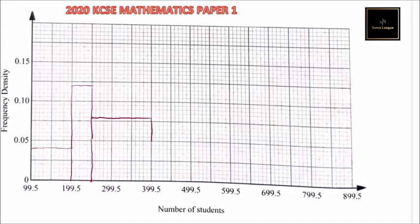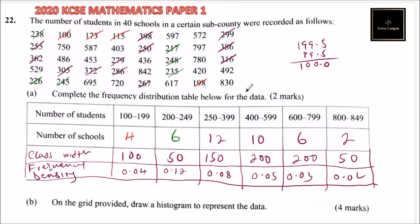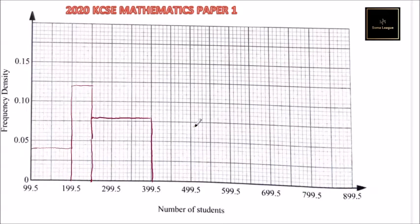Then we have from 399 to 599, this is 400 to 499, this is what I'm calling 399.5. So it is 0.05, so this is where you put that. So that is how you draw that.